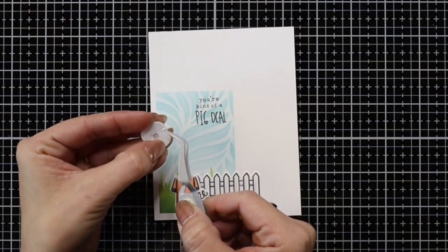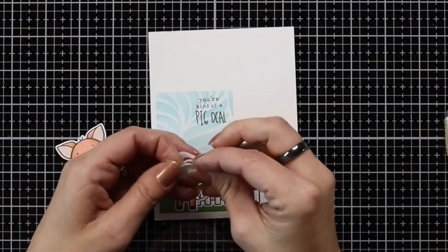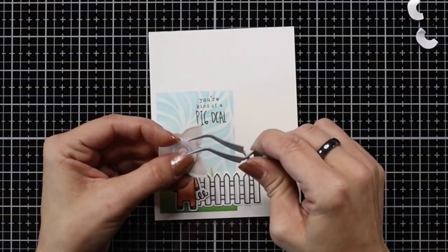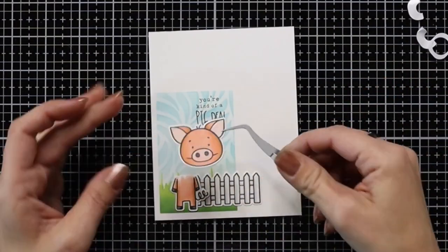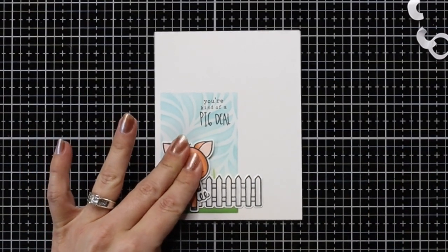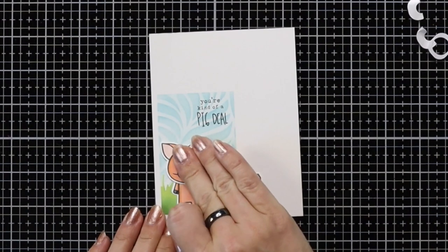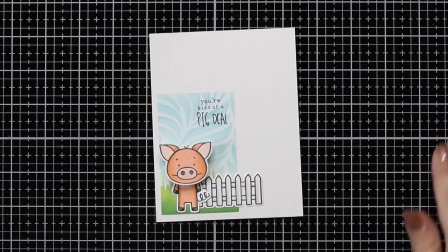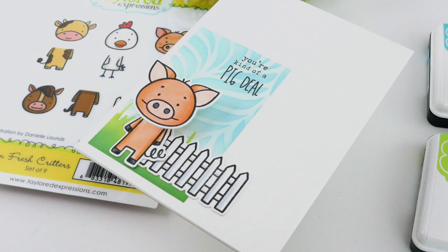Then after I have that done, I just attached my fence and the body of my pig with that tape runner and once again adding one of these fun little wobblers to the back of the head. That'll finish off my two cards for you today. I hope this gives you some ideas of how you can use these farm fresh critters with maybe some other stamps and stencils that you have in your stash. Thank you so much for joining me today and I'll catch you again real soon.